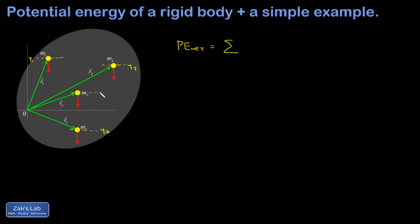And then I can just apply the point mass formula to each of them. So I'm going to have the sum of all the Mi's times G times the Y-coordinate of each of those Mi's. Now, when you have a sum where you have a common factor in every single term in the sum, you can factor it out.